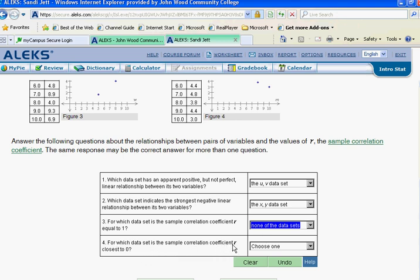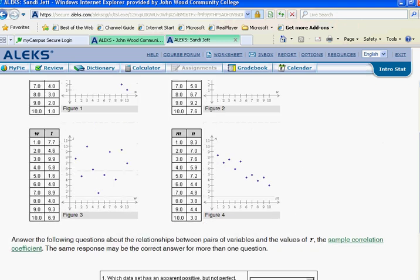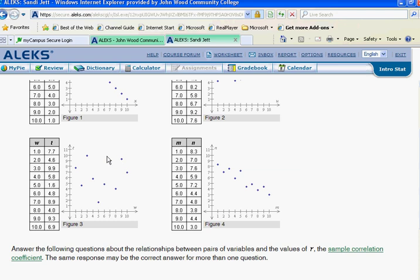For which data set is the sample correlation coefficient r closest to zero? If it was close to zero, it was very scattered. This is the answer for that one that is on the axis WT. That will be my answer.